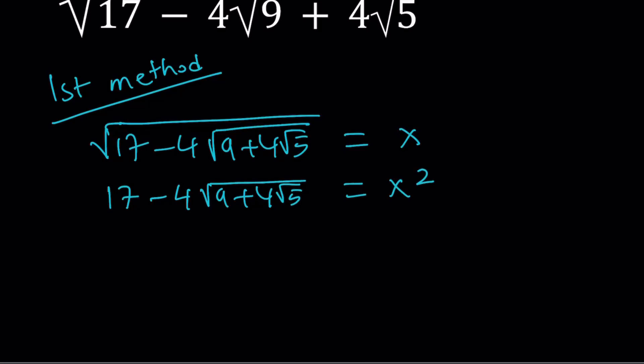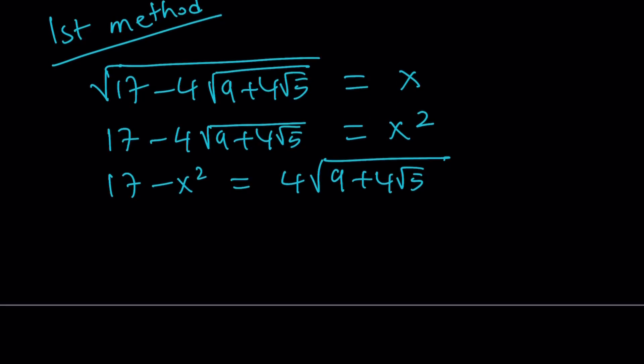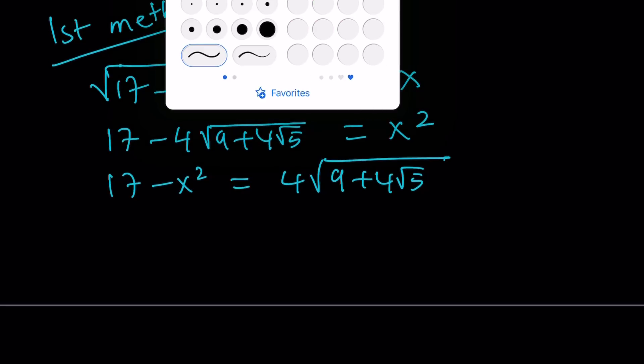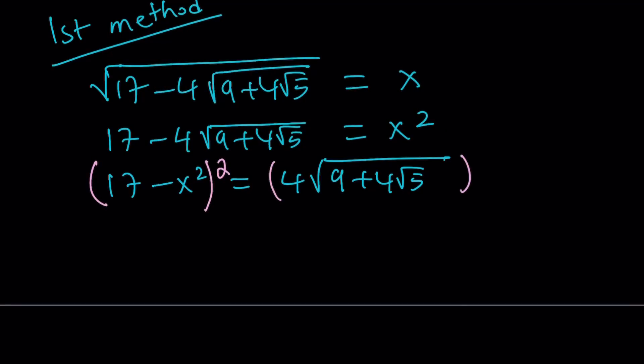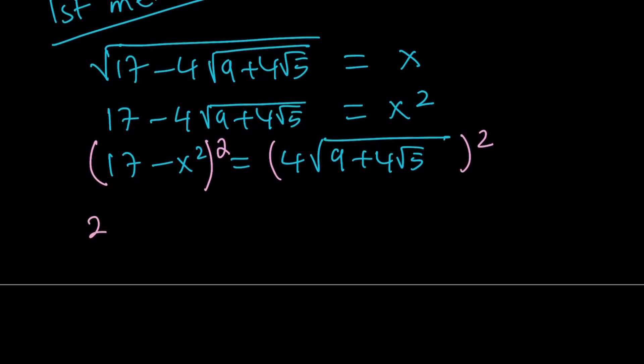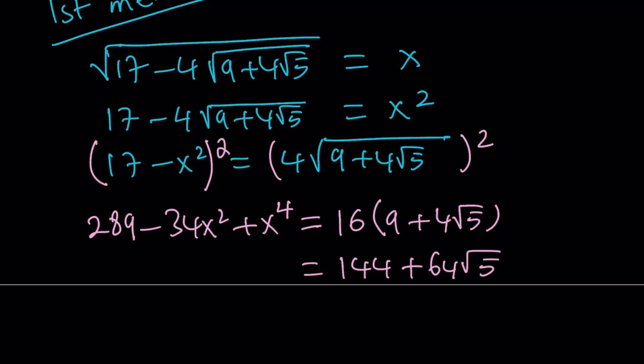I would like to put the 17 and x squared together. We still have a radical on the right-hand side, so let's square both sides again. When we do, the left-hand side becomes 289 minus 34x squared plus x to the fourth power. And then the right-hand side becomes a product, which is 4 squared, 16, multiplied by 9 plus 4 root 5.